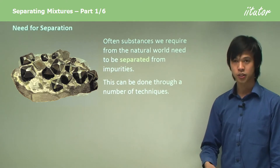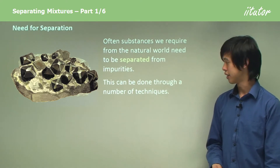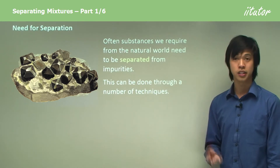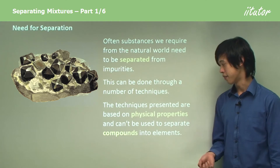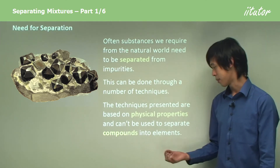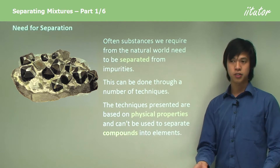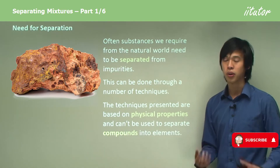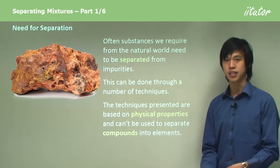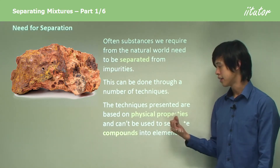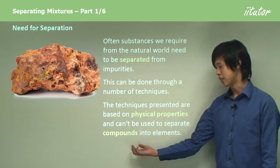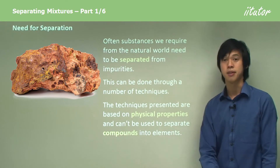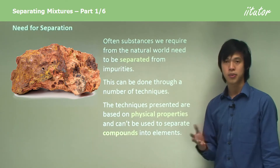In order to separate mixtures we can use a number of different techniques, and these are based on the physical properties — and sometimes mostly the physical properties — of the chemicals you want to separate. The techniques are based on physical properties and can't be used to separate compounds into elements. So the different separation methods are all based on physical properties such as boiling points, melting points, density, and solubility. We can't use these to separate compounds like aluminium oxide into elements like aluminium.